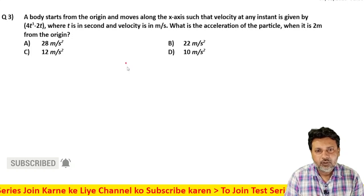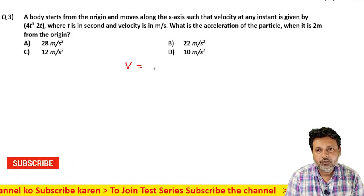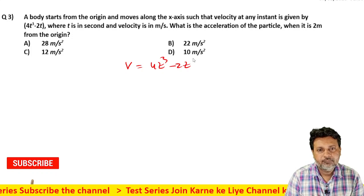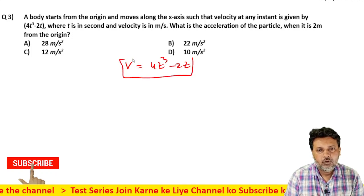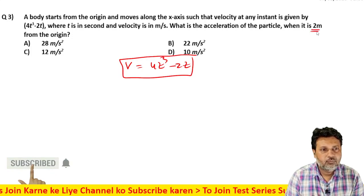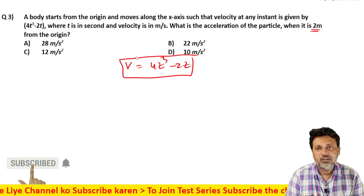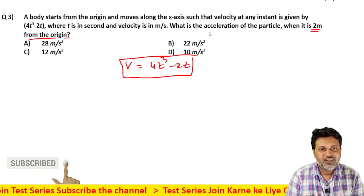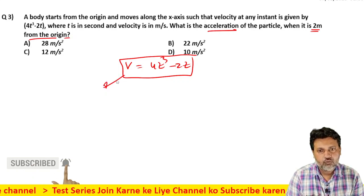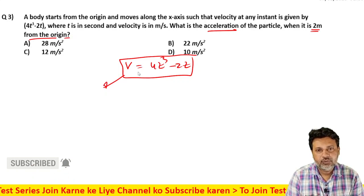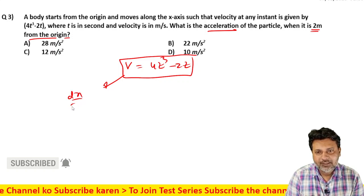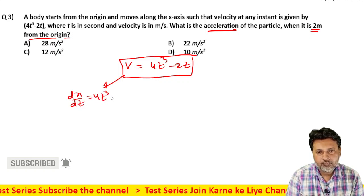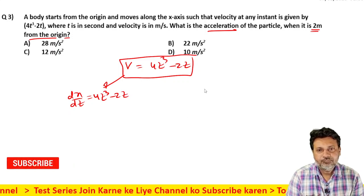सबसे पहले velocity का equation दिया हुआ है — क्या दिया हुआ है — 4t³ minus 2t. और question में यह कह रहा है कि जब object origin से 2 meter पहुंच जाता है, तो उसका acceleration कितना होना चाहिए? तो इस equation को आप ऐसे लिख सकते हो: V is equal to dx/dt, यानि v = 4t³ minus 2t.